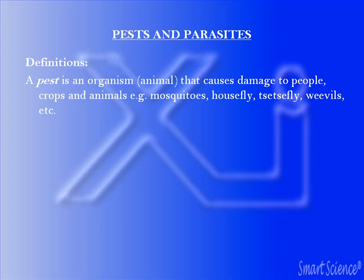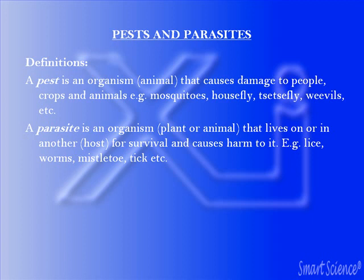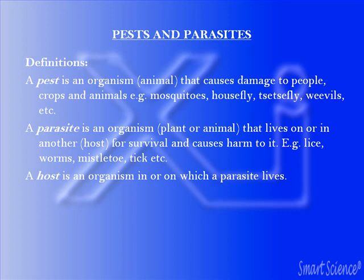A parasite is an organism, either a plant or an animal, that lives on or in another plant or animal — which we call the host — for survival, and the parasite causes harm to the host. Examples of such parasites are lice, worms, mites, ticks, etc. A host is an organism on or in which a parasite lives.